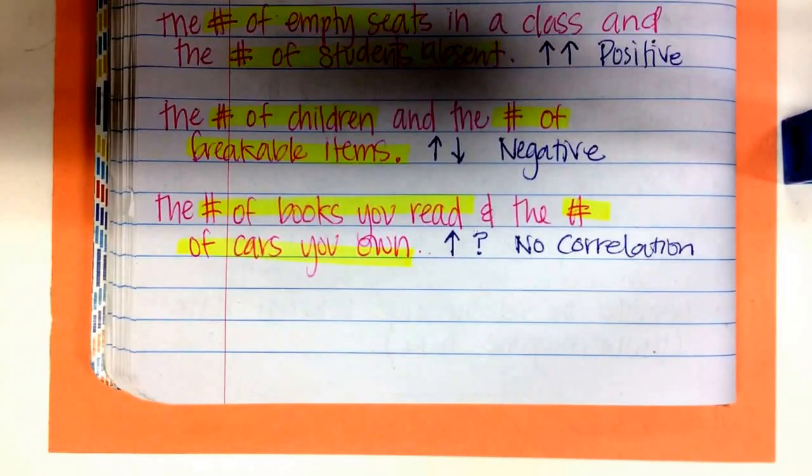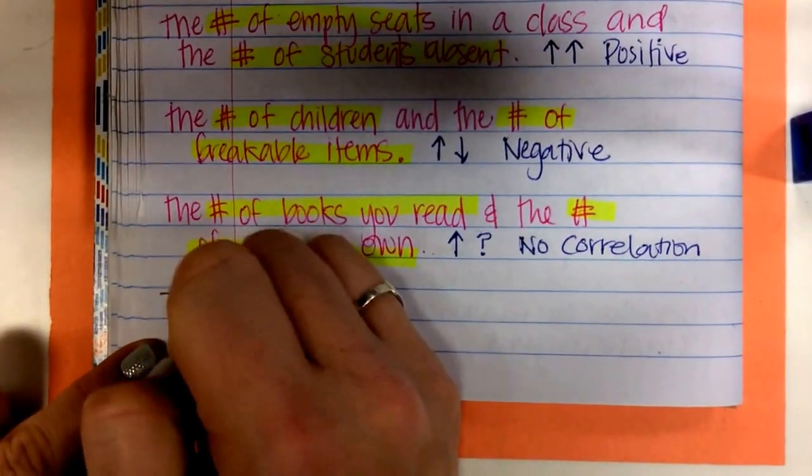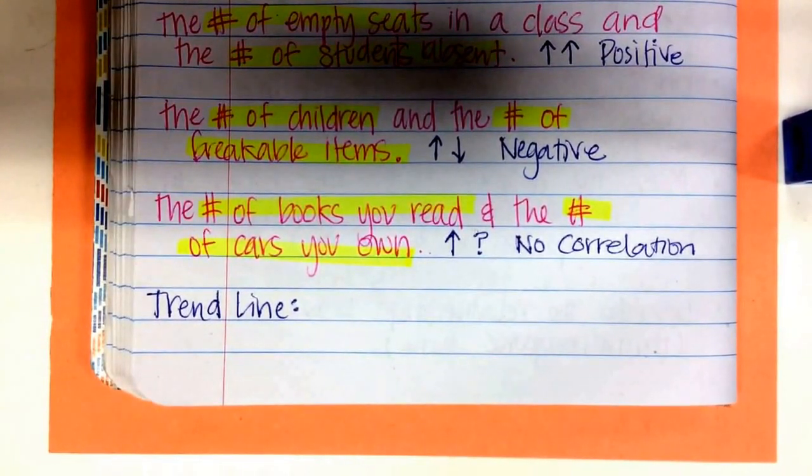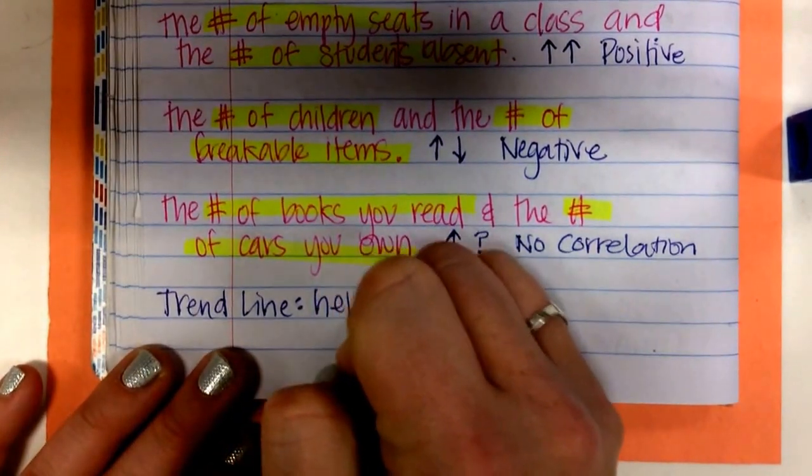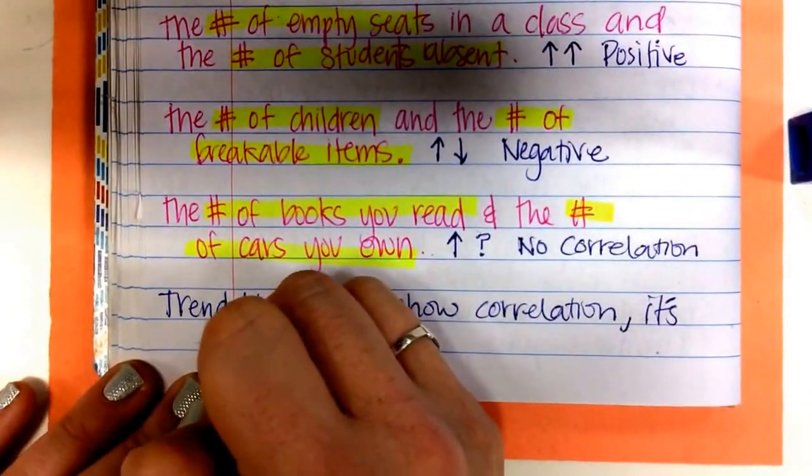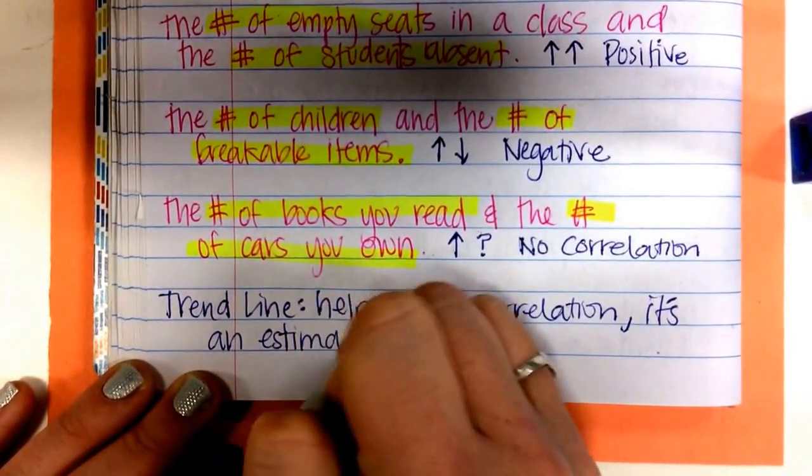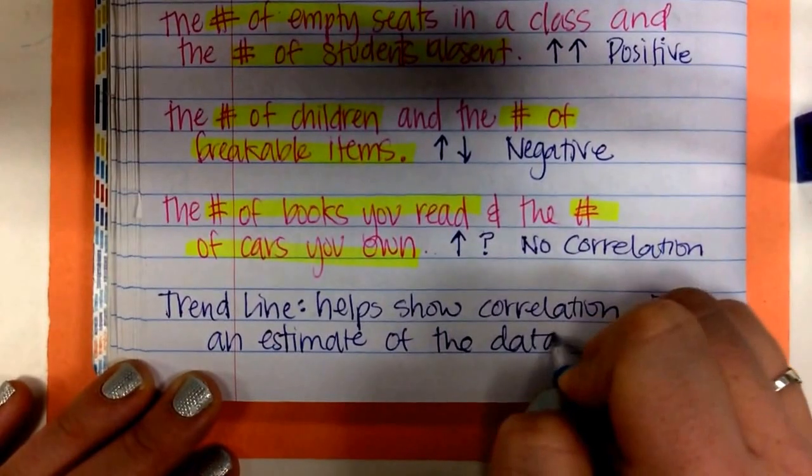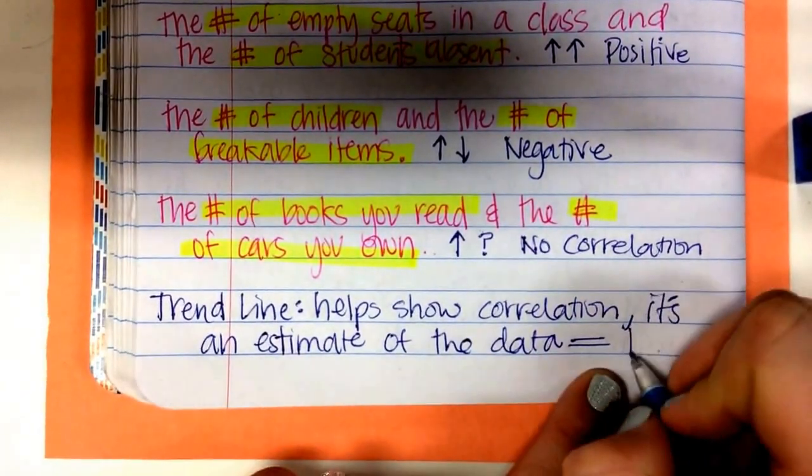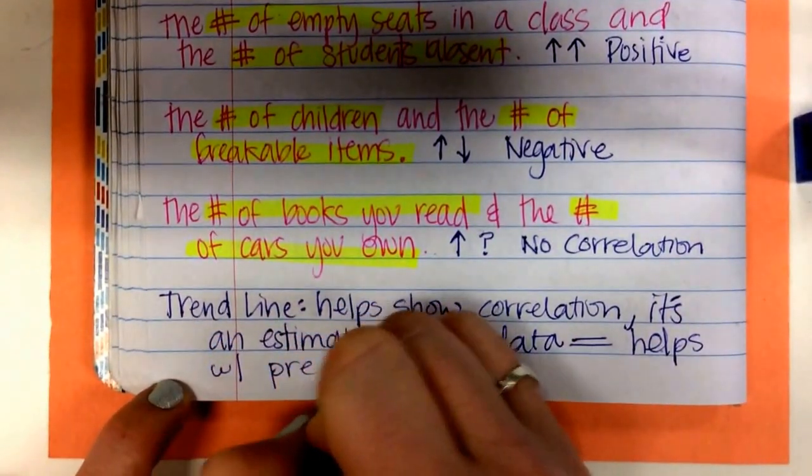Guys, please close your computers. All right, so then let's talk about a trend line. A trend line helps show correlation. It's an estimate of the data. It helps with predictions.